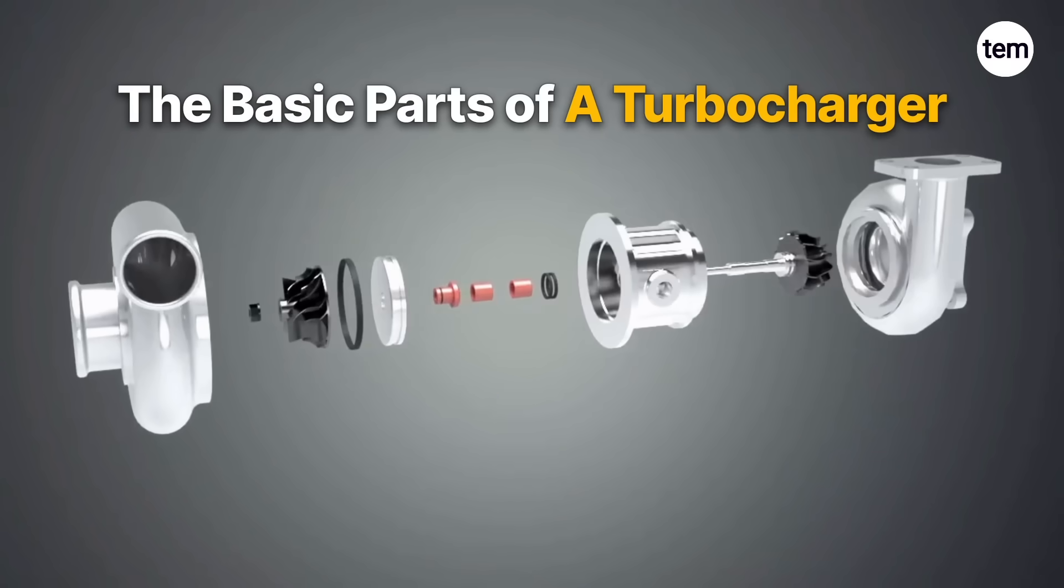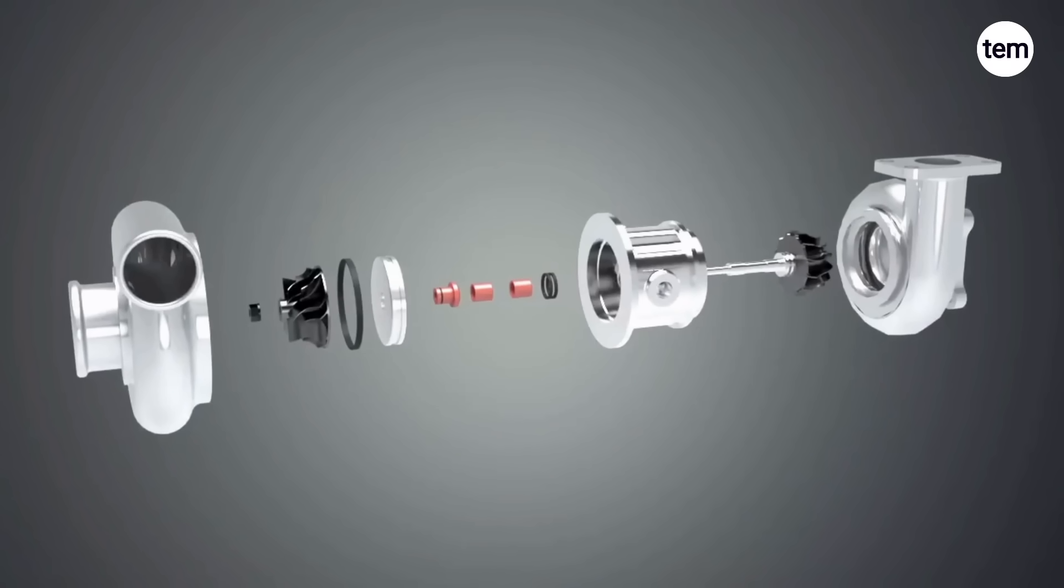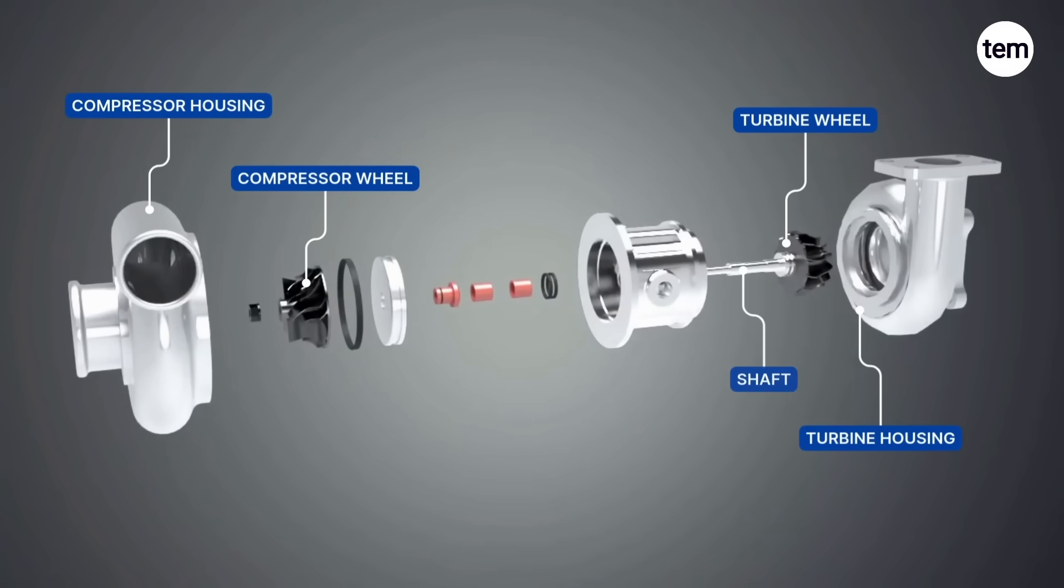First, we will see the basic parts of a turbocharger. A turbocharger consists of compressor housing, compressor wheel, turbine wheel, turbine housing, connecting shaft, bearings, oil seals, and center housing.